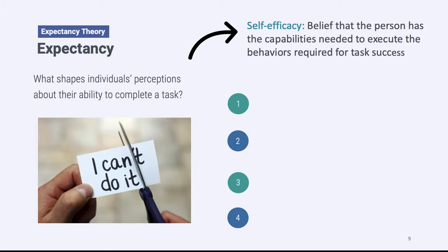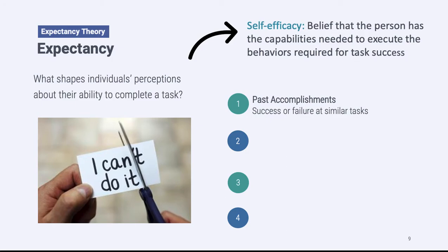There are four factors that go into someone's self-efficacy. The first is called past accomplishments — a person looks at how they've performed in the past on similar tasks, and that shapes whether they have high or low self-efficacy. Imagine you are asked to write a paper for a class. If you've been successful writing papers in other classes, you might have high self-efficacy. However, if you've struggled writing essays in the past, you might feel you have low self-efficacy for that assignment.